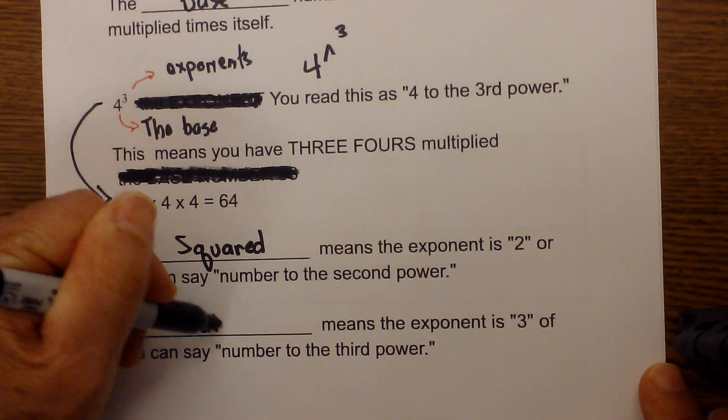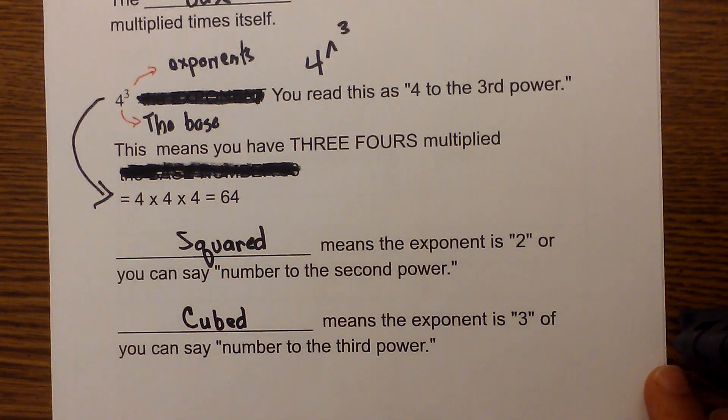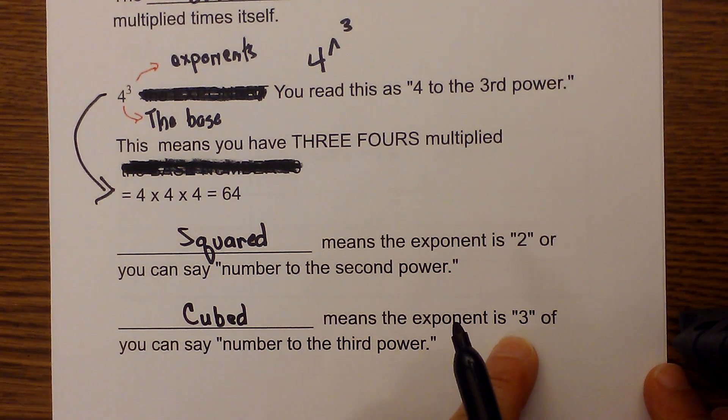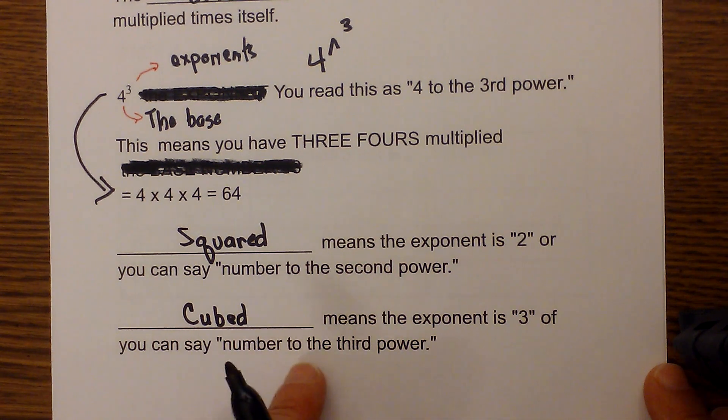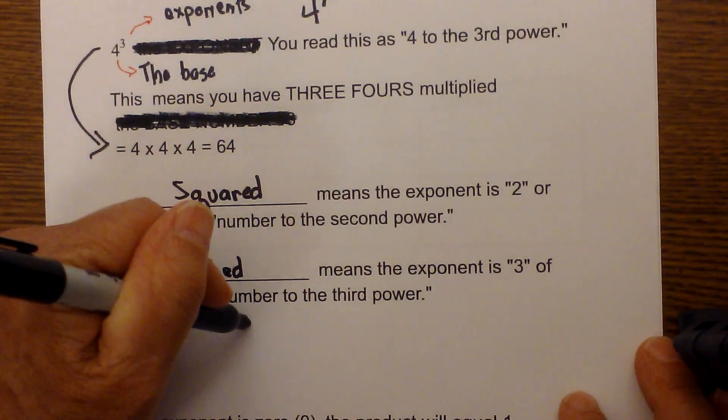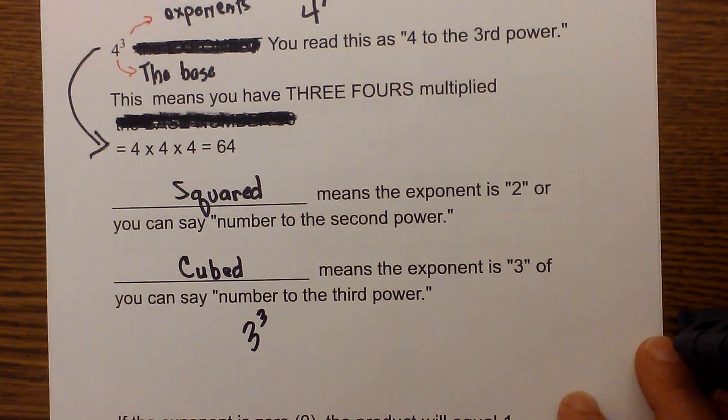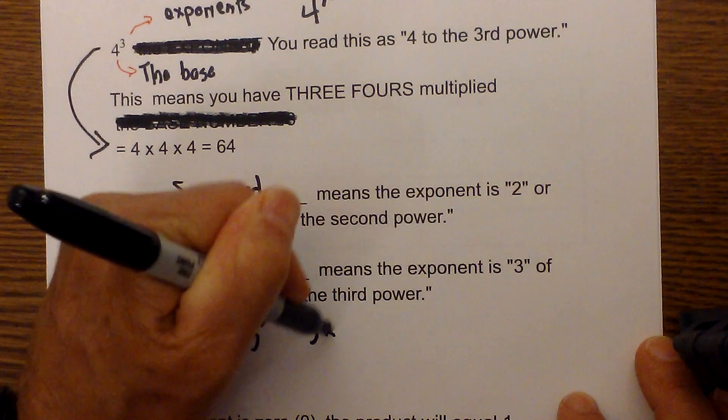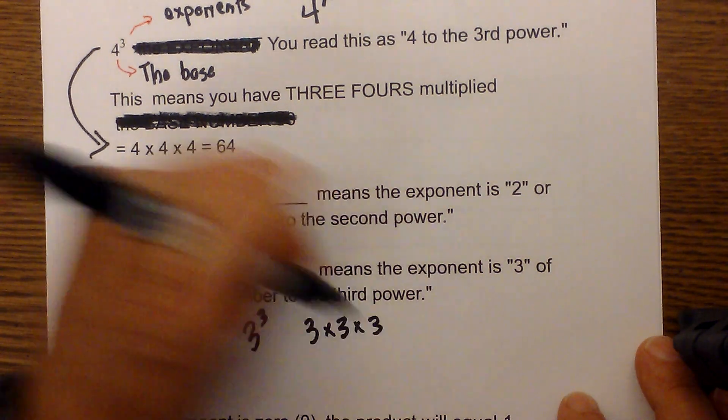Sometimes you hear the term cubed, and this means the exponent is 3, or you can say number to the 3rd power.